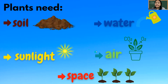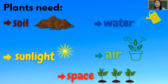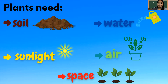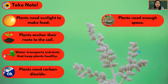Let's sum it up with a summary of the needs of plants. First, we have soil, then second, water, then sunlight, then air — carbon dioxide — and the last one, space. These are the five things that plants need to grow healthy and strong and of course, much healthier.